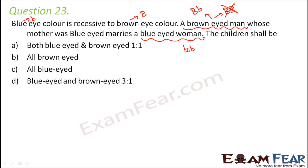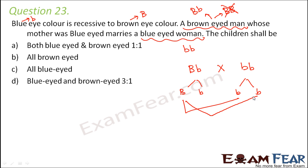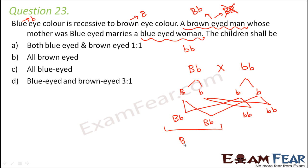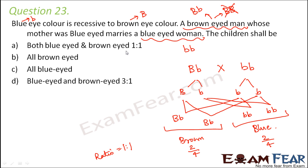Now we know the man is Bb and the woman is bb. The man produces gametes B and b; the woman produces gametes b and b. The possible offspring are: Bb, Bb, bb, bb. Two out of four are brown-eyed (Bb) and two out of four are blue-eyed (bb). So the ratio of brown-eyed to blue-eyed children is 1:1.